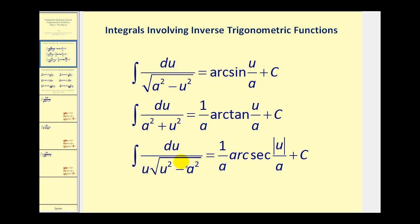And then if it does have a square root, notice the formula for arcsine is a squared minus u squared, and the formula for arcsecant is u squared minus a squared. And this formula also has u outside the square root.